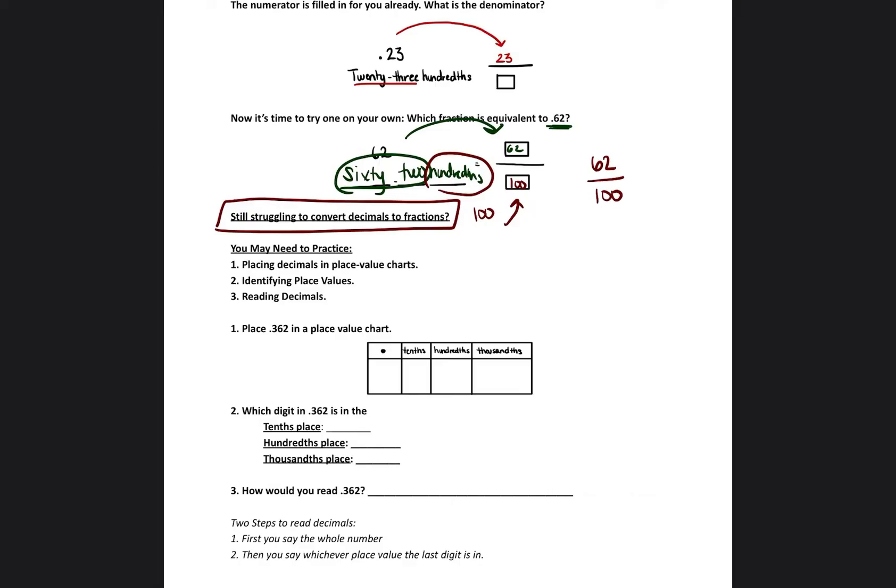So let's practice just placing this decimal in a place value chart. So it's 0.362. You put the point where the point is. You put the 3. You put the 6. And you put the 2.